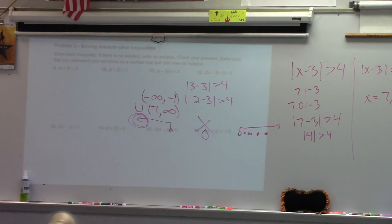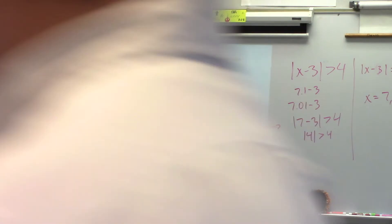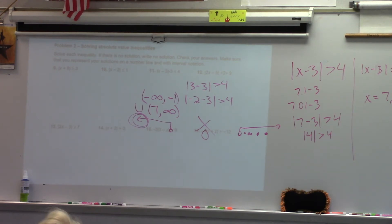I'm going to test something to the right, something in the middle, and something to the left. Which of those regions are going to be solutions? Instead of solving as an inequality, remember what we're going to do first — make an equation. Find those critical values. Do that from the very beginning. Now that the absolute value is on its own, what can we do? x plus 8 could be a positive 3, and x plus 8 could be a negative 3.